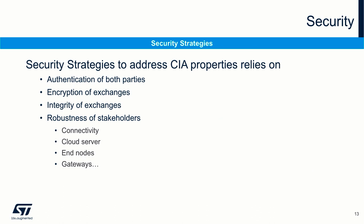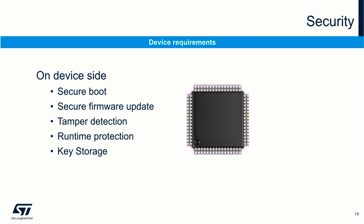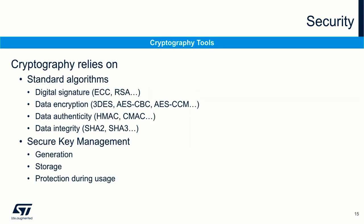If we look at security under the scenario of an IoT system, for example, the security strategies to address CIA properties rely on many things, such as authentication of both parties, use of encryption of exchanges, integrity of exchanges, and robustness of stakeholders — connectivity, cloud server, end nodes, gateways, and so on. There are also security requirements on the device side, typically secure boot, secure firmware update, tamper detection, runtime protection, and key storage. For information security, most of the time cryptographic operations will be involved.